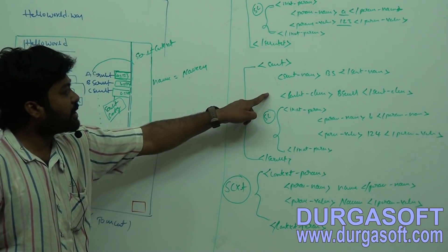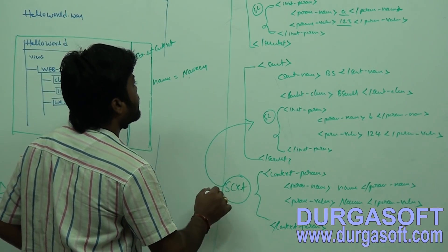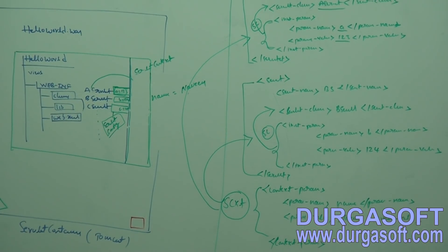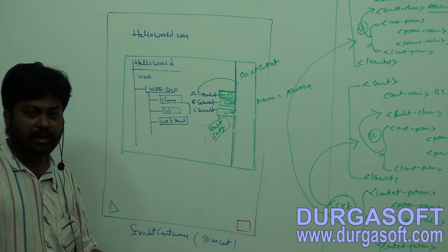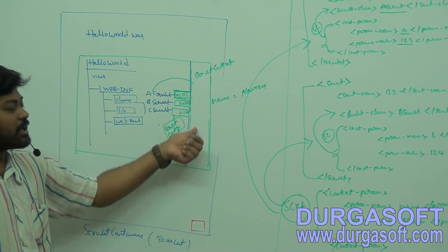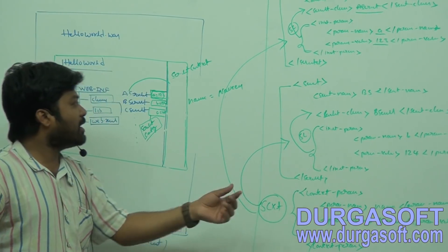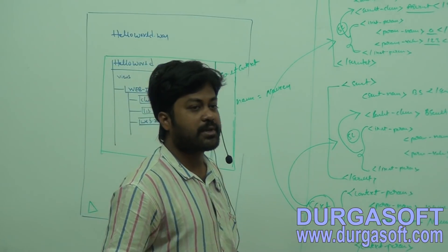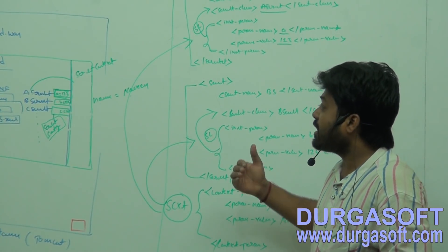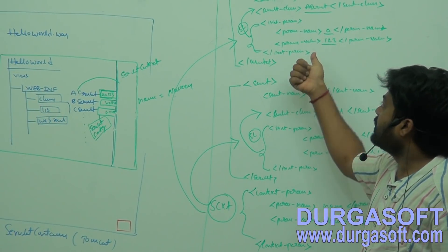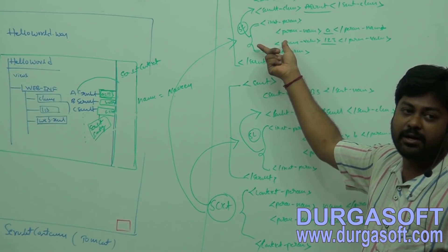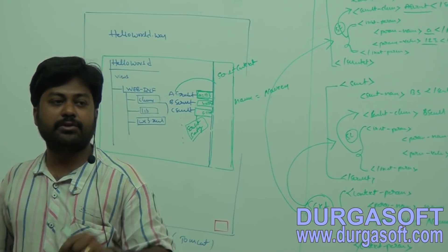So this context-param data — who can access it? Any servlet can access it. But the init-param data under a specific servlet — only that servlet can access it. Your Tomcat container, by reading the web.xml file, will take whatever context-param data you have and keep it under the context object. Whatever init-param data you have, it will store under the config object. If you want to supply any inputs to your servlets — like command line arguments in core Java — you can store data under init-param or context-param, keeping it under ServletContext or ServletConfig to share data to your servlet classes.